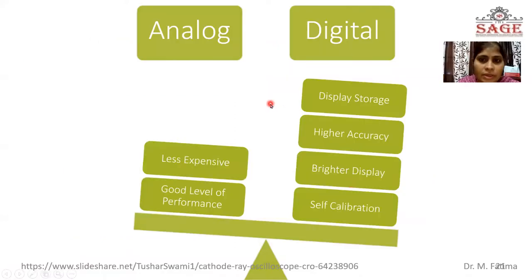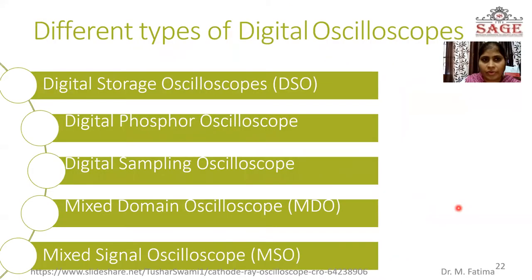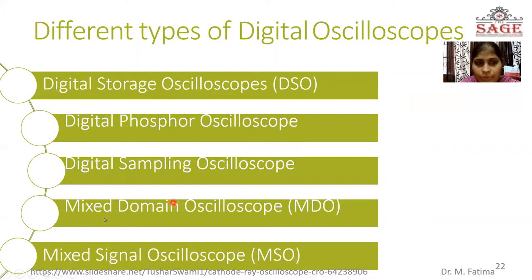The advantages: the analog oscilloscope is less expensive and has a good level of performance. The digital oscilloscope has display storage — whatever signal is displayed can be stored — it has high accuracy, brighter display, and self-calibration. Different types of digital oscilloscope include: digital storage oscilloscope, digital phosphor oscilloscope, digital sampling oscilloscope, mixed domain oscilloscope, and mixed signal oscilloscope.